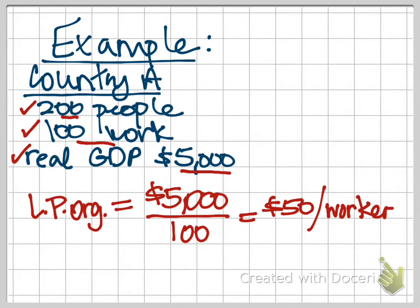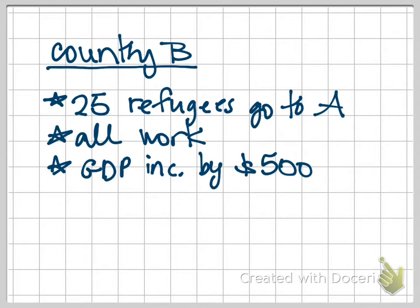But then we're going to have a change. Over here we have Country B, and Country B has 25 refugees that are allowed to move to Country A. They're all hard workers, so they're all allowed to work. Because of them coming and working in Country A, the GDP in Country A is going to increase by $500. So now we want to see what labor productivity is now — did it increase or decrease, and by how much was the change?